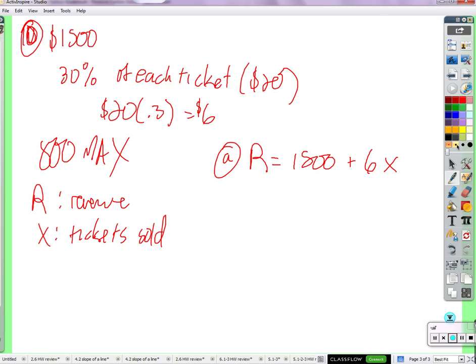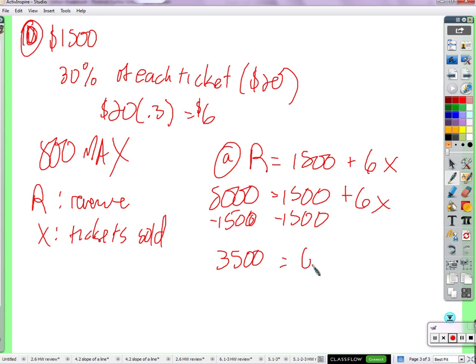Part B. The band needs $5,000 for new equipment. We've already made $1,500. I just need to make some more, get up all the way to $5,000. How many tickets need to be sold for the band to earn enough to buy new equipment? R could be $5,000. Their revenue needs to add up to $5,000. We know that revenue is going to come from $1,500 plus six times the number of tickets. So we solve for x. We subtract $1,500. That's going to put me at $3,500, and that's equal to 6x divided by 6.